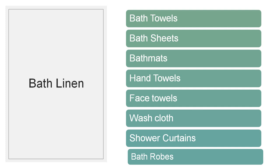The next classification is bath linen. Bath linen includes bath towels, bath sheets, bath mats, hand towels, face towels, washcloths, shower curtains, and bathrobes. The most important requirement for bath linen or toweling material is that it should be absorbent, durable, and soft. It should have about 100% cotton and an uncut pile weave with 1⅛ inch height. The bath sheets are slightly bigger than the bath towels. Bath mats should be a little heavier and thicker to serve their purpose.